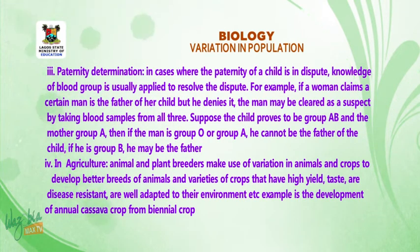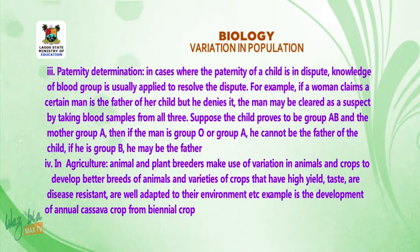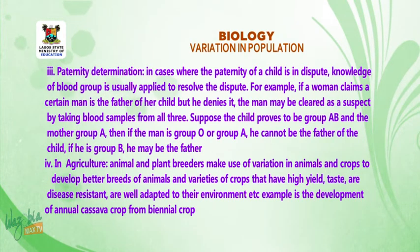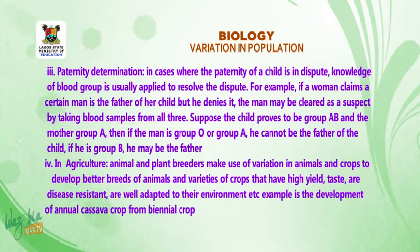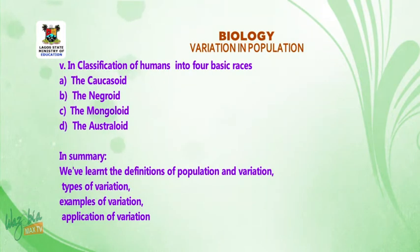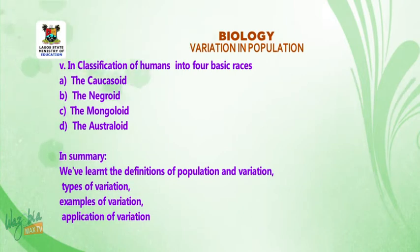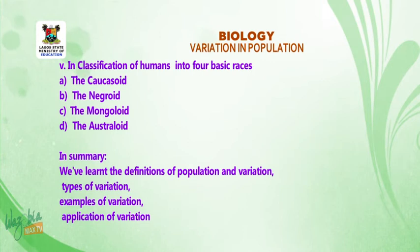4. In agriculture, animal and plant breeders make use of variation in animals and crops to develop better breeds of animals and varieties of crops that have high yield, taste, are disease resistant, and are well adapted to their environment. An example is the development of annual cassava crop from biennial crops. 5. In classification of humans into four basic races: the Caucasoids, the Negroids, the Mongoloids, and the Australoids.